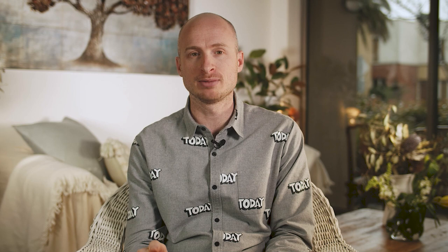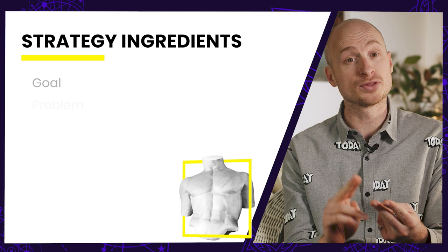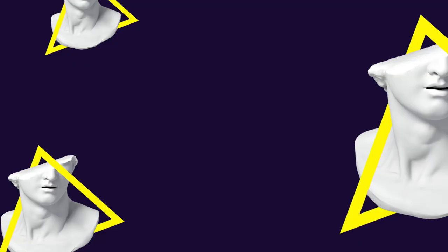We're going to break it down into the three essential building blocks and two important perspectives that you need to build a strategy. A strategy is made up of three essential blocks: the goal, the problem, and the solution, and two perspectives — the business point of view and the consumer point of view.